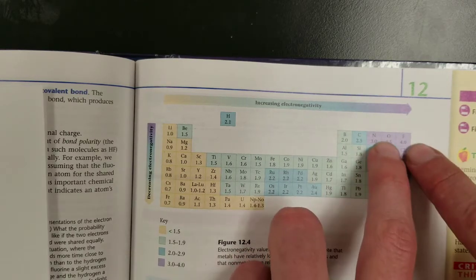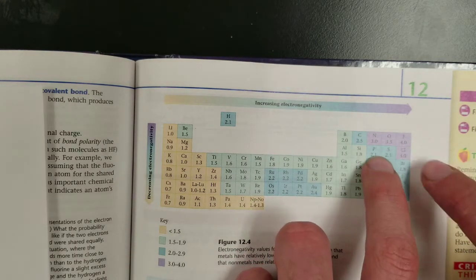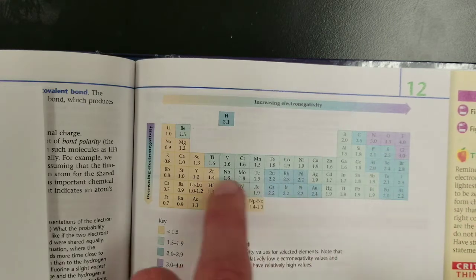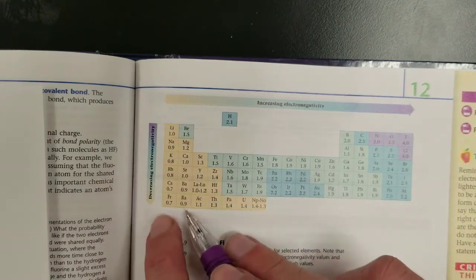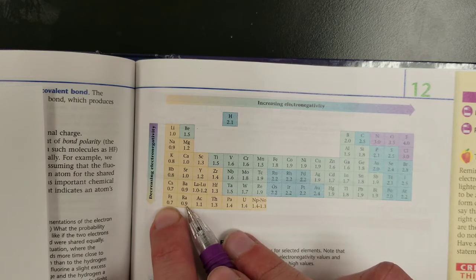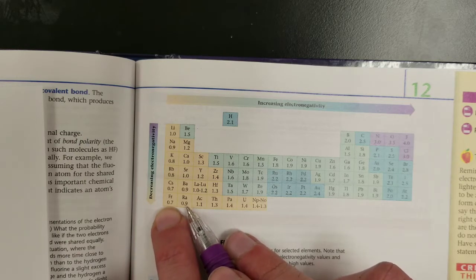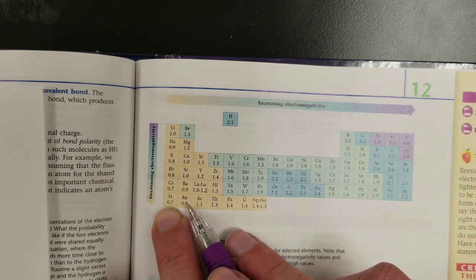Whereas if they are similar values for electronegativity, such as these, or maybe even like, maybe you pair these two together, they're going to share electrons equally because they have roughly equal tendency to attract it to themselves.